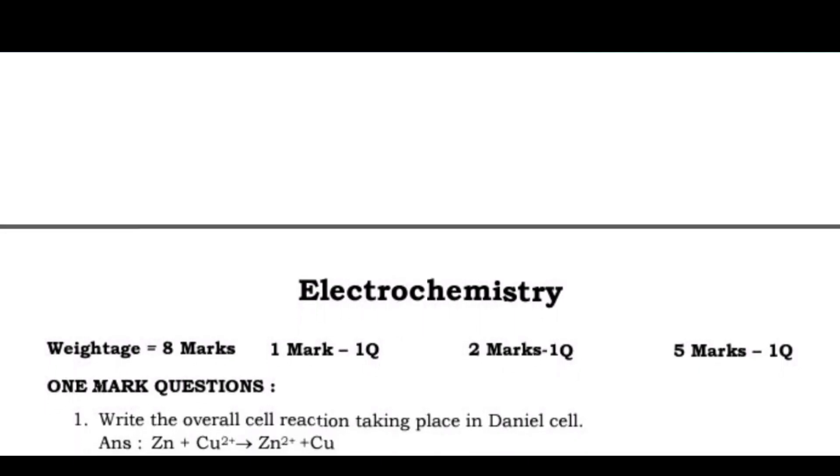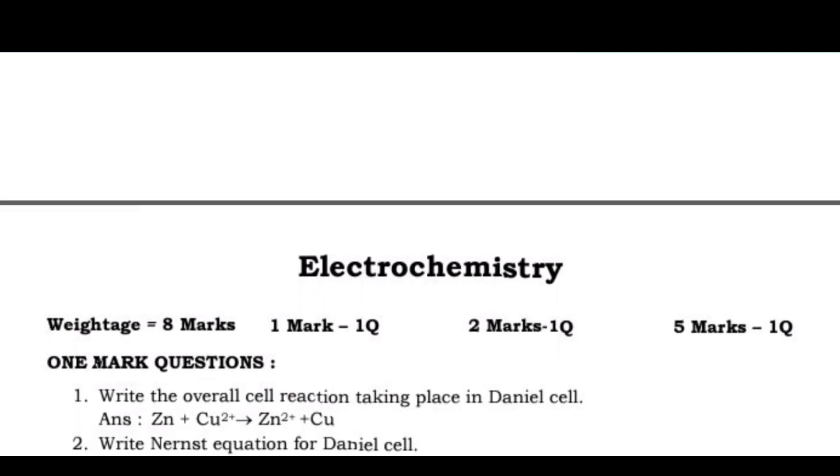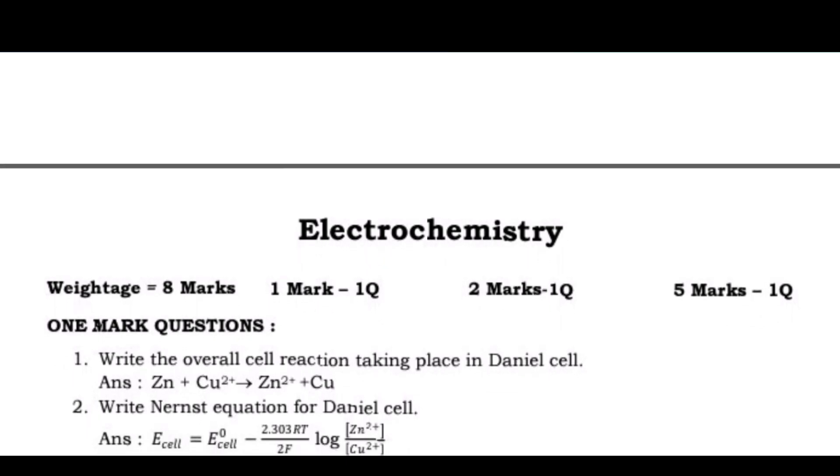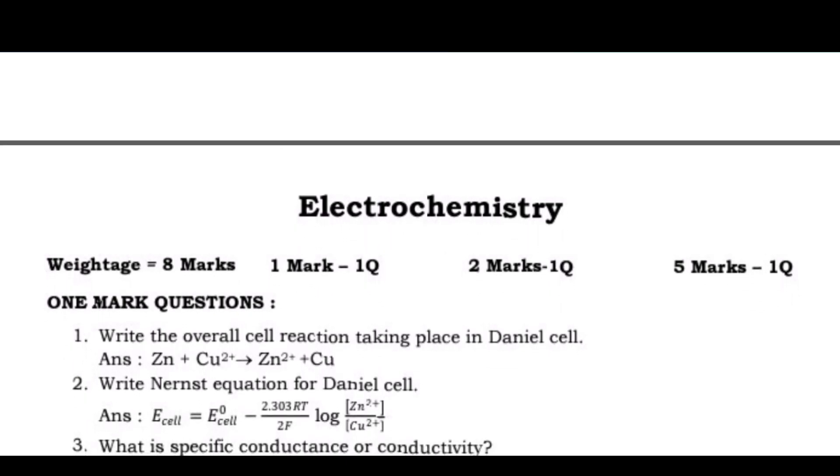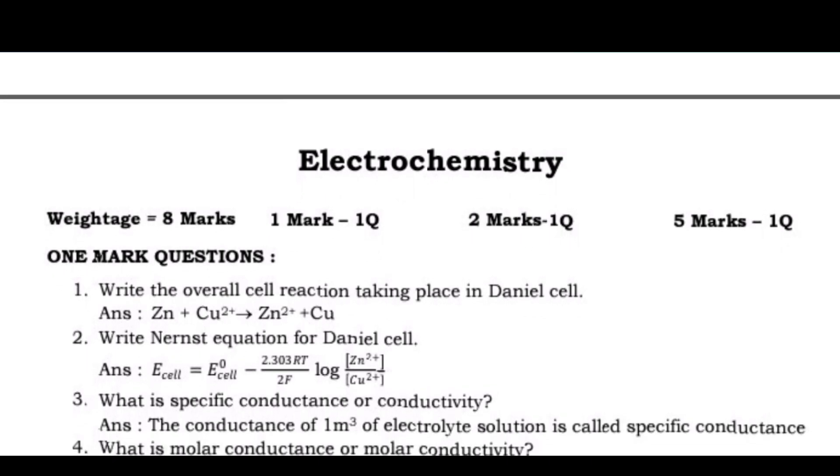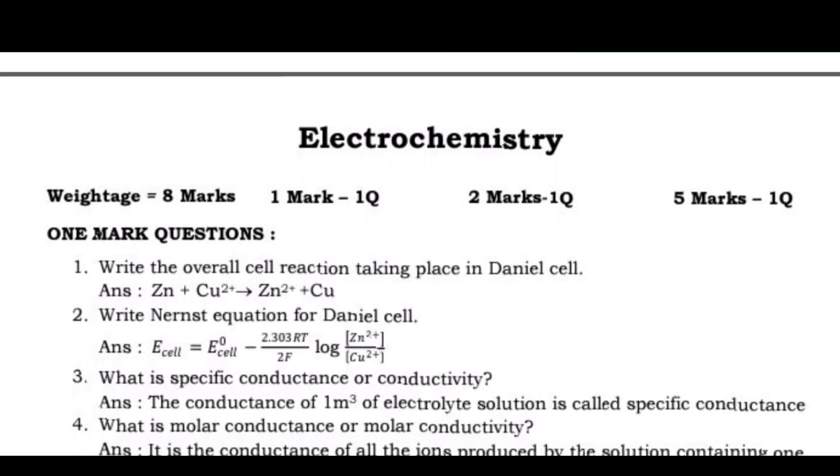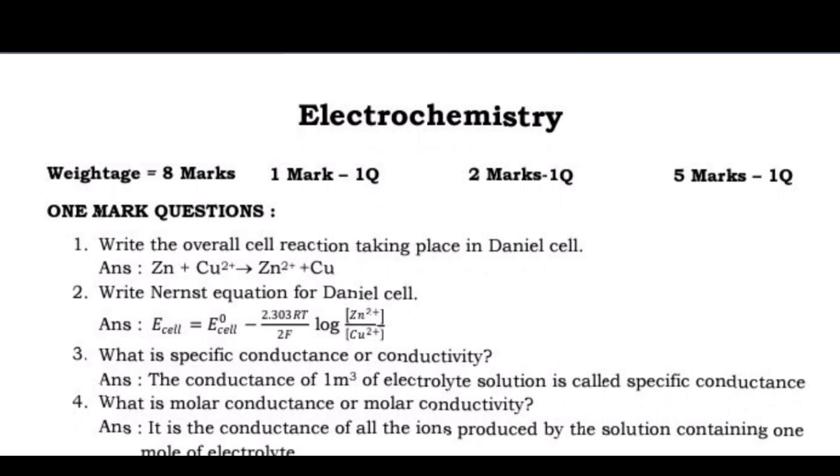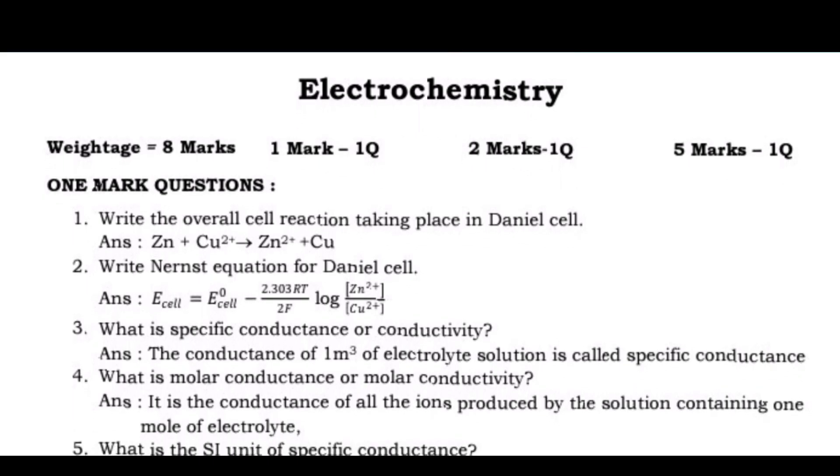1 mark questions. Question 1: Write the overall cell reaction taking place in Daniel's cell. Answer: Zinc plus Cu2+ gives Zn2+ plus Cu. Question 2: Write Nernst equation for Daniel's cell. Answer: Ecell = E°cell - (2.303RT/nF) log [Zn2+]/[Cu2+].